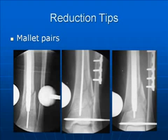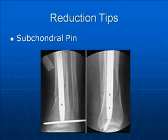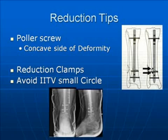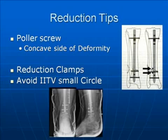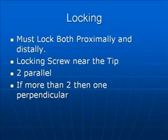Further reduction methods include polar screws. It is always applied on the concave side of the deformity and helps guide reduction. This can be used both in the AP plane and the lateral plane. Here is one of our cases with a polar screw for an undisplaced fracture fixed with a screw. Locking must be done both proximally and distally. Locking through near the tip is a must as per nail design. Two screws should be parallel to each other; the third should be perpendicular — this is the biomechanically recommended construct.